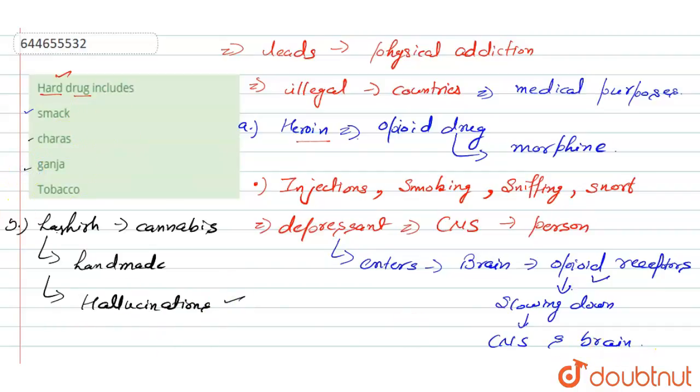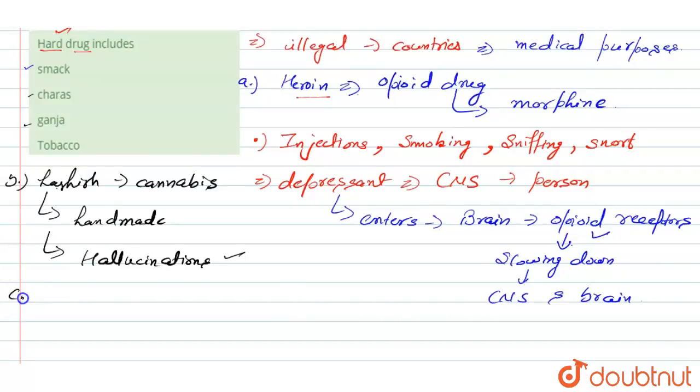Next here is ganja. So what is ganja? Ganja is the synonym of marijuana, which is also a cannabis. We can say that it is also cannabis, and here this cannabis is taken in the body in the form of smoking.